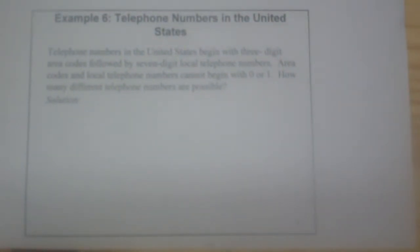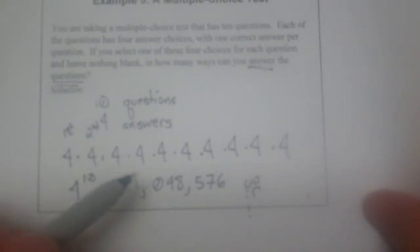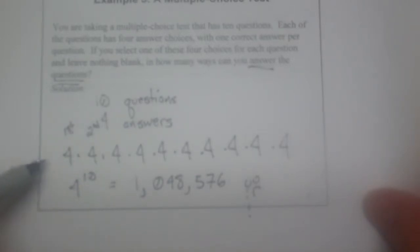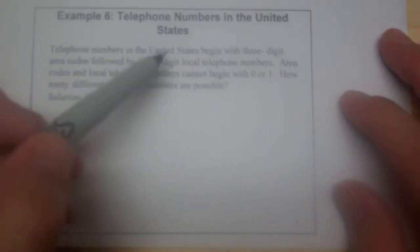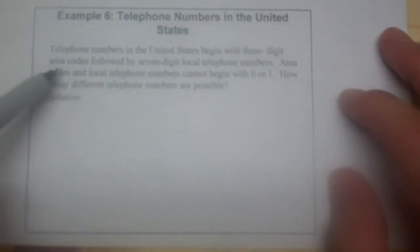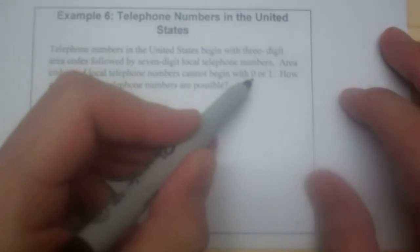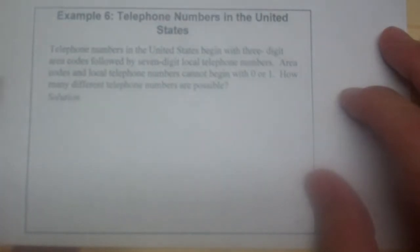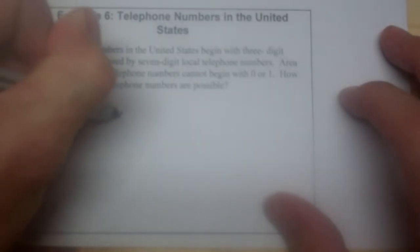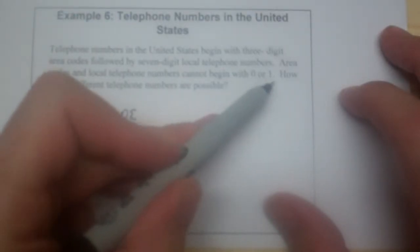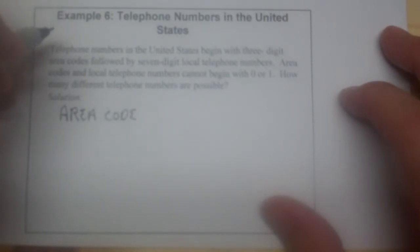Last but certainly not least, the telephone number problem. Hopefully what you saw from example number five is that it doesn't matter the number of items. What matters is what you're picking out of. So here I was picking answers, so that's why I had the fours all the way across. Here, with telephone numbers in the United States, they begin with three-digit area codes followed by seven-digit local telephone numbers. Area codes and local telephone numbers cannot begin with zero or one. So how many different telephone numbers are possible? Well, first, let's think about the area code. If it can't begin with a zero or a one, how many digits are possible in the beginning of the area code? Well, eight. Two, three, four, five, six, seven, eight, nine. So there are eight possibilities.